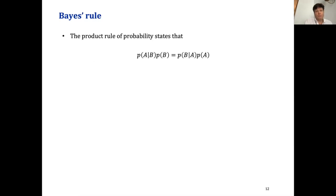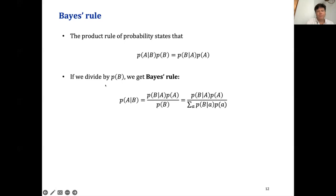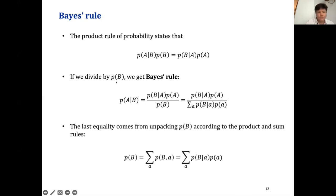Going back to conditional probabilities, we can take the equation expressing the joint probability two ways around — P(A|B)·P(B) = P(B|A)·P(A) — and divide by the probability of B. There we have Bayes' rule. This equation is the reason we call this Bayesian inference. We can also unpack the marginal probability of B by summing over possible values of A using marginalization and the product rule simultaneously.